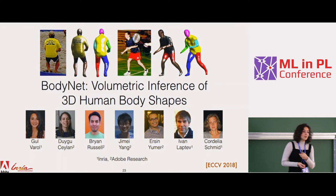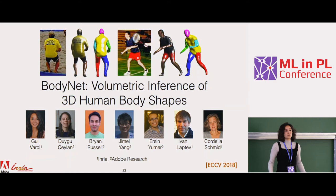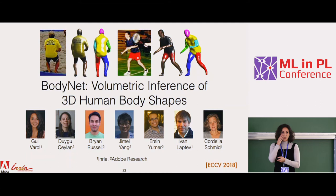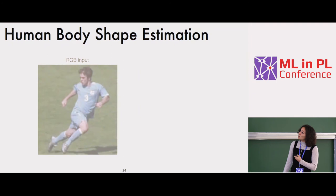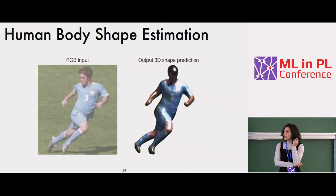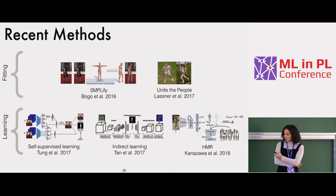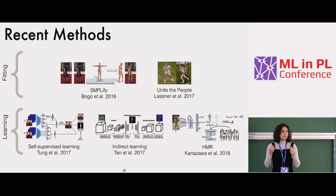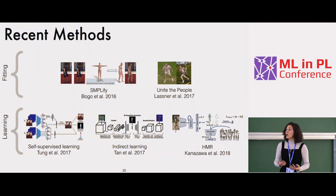Moving on to shape estimation: 3D full shape estimation instead of just pixels, segmented parts, or depth — which are 2.5D representations. This is a collaboration with Adobe Research and INRIA, published last year. Given a single RGB image, you want to reconstruct the full mesh or 3D occupancy of the body. Since around 2016, approaches used fitting methods: a neural network gives 2D joint positions, then an optimization algorithm finds the best SMPL parameters fitting those 2D pose estimates.